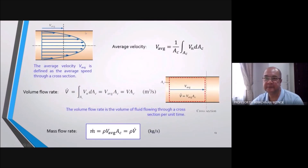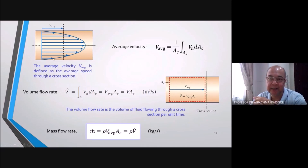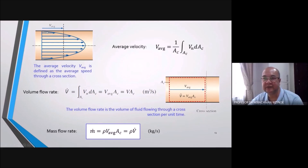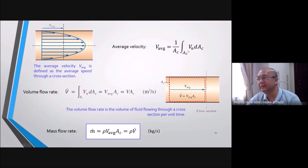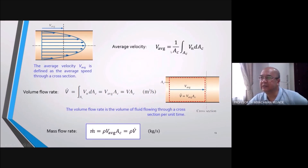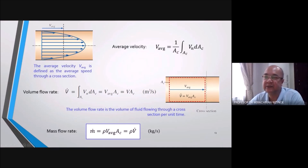Consider flow in a pipe — the velocity inside is not uniform. The velocity at the wall is zero, grows toward the center, and falls back to zero at the other wall; this is the velocity profile. When we say 'velocity in the pipe,' we mean the average velocity, calculated as V_avg = (1/Ac) ∫ V_n dAc. When a single velocity value is quoted for flow in a pipe, it represents this average velocity, not the actual varying profile.